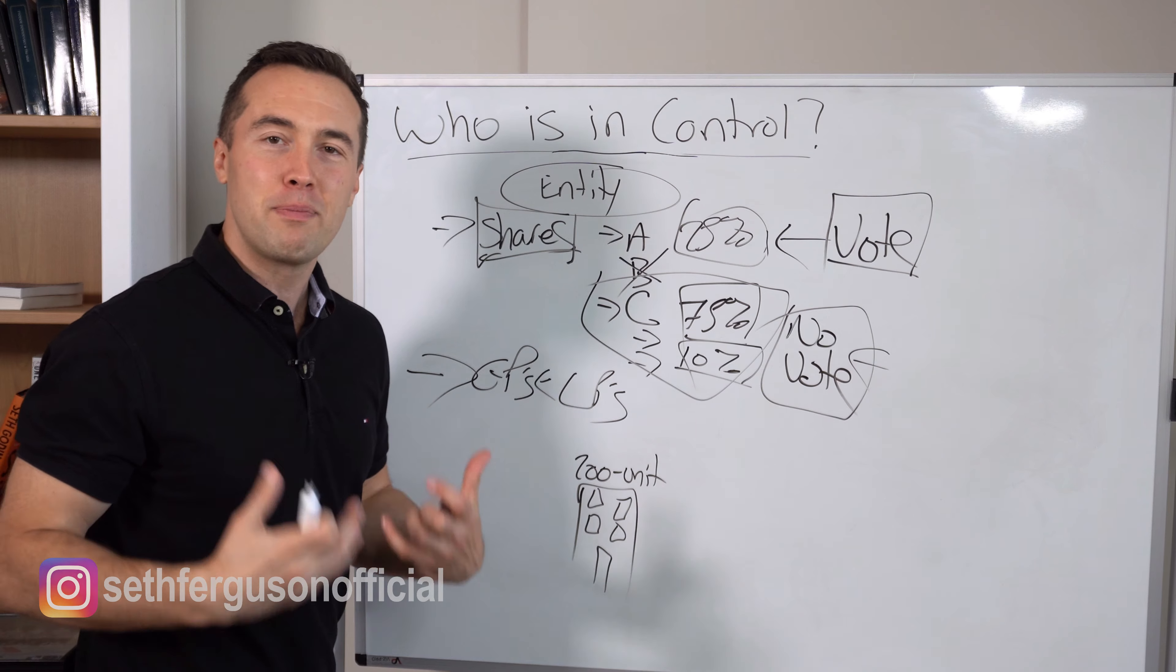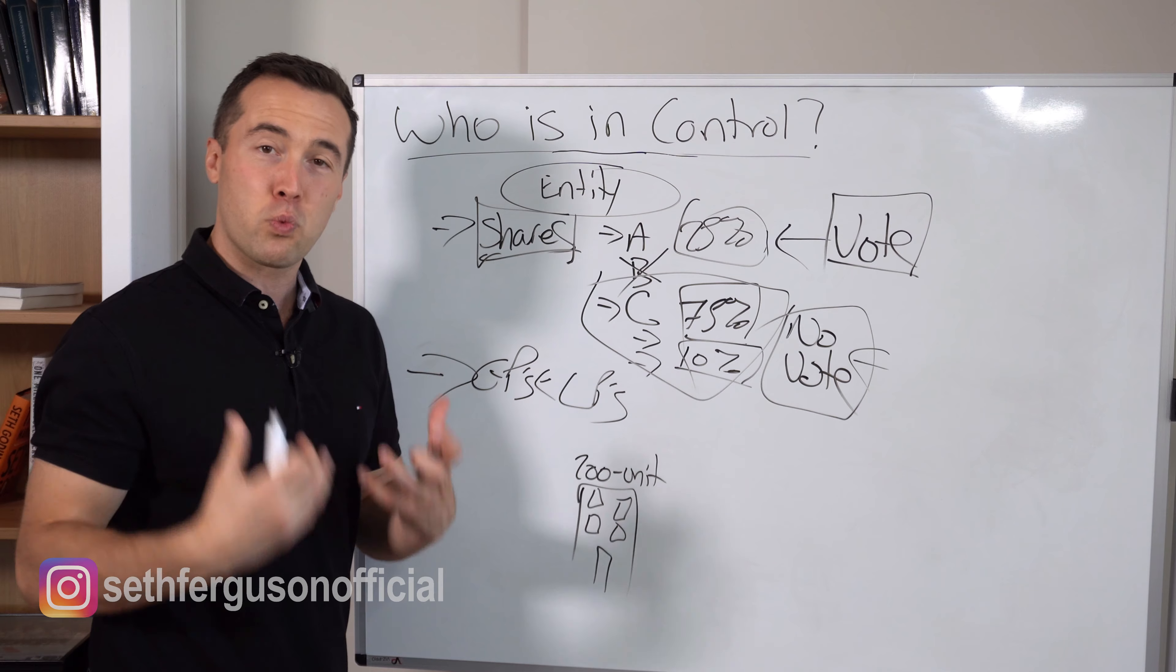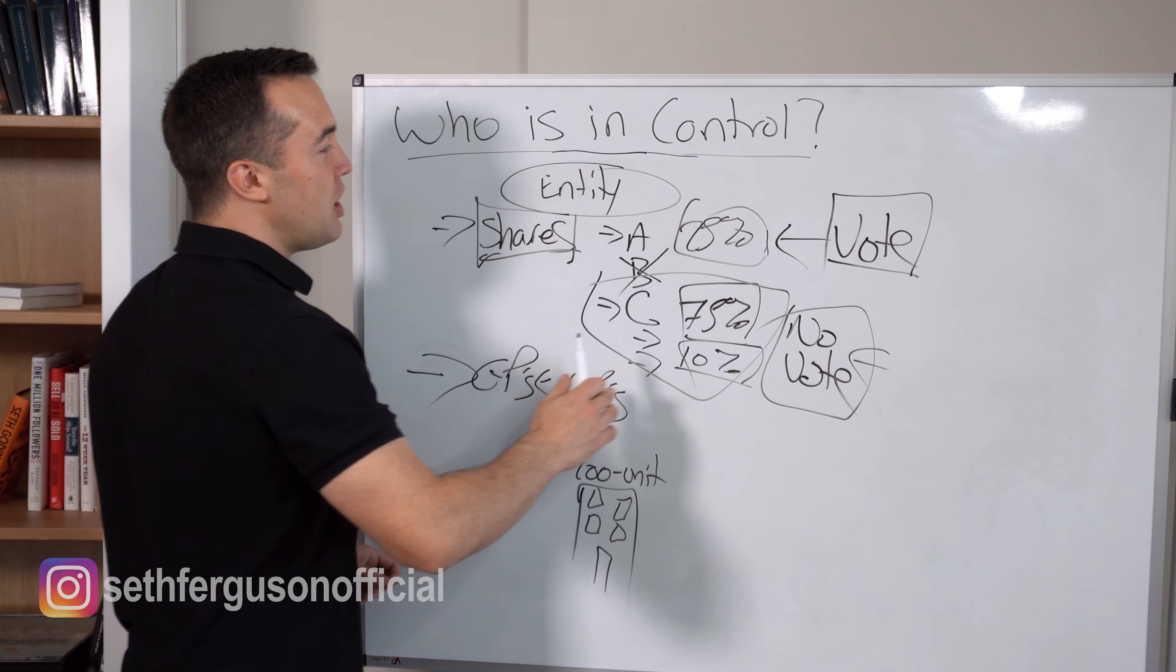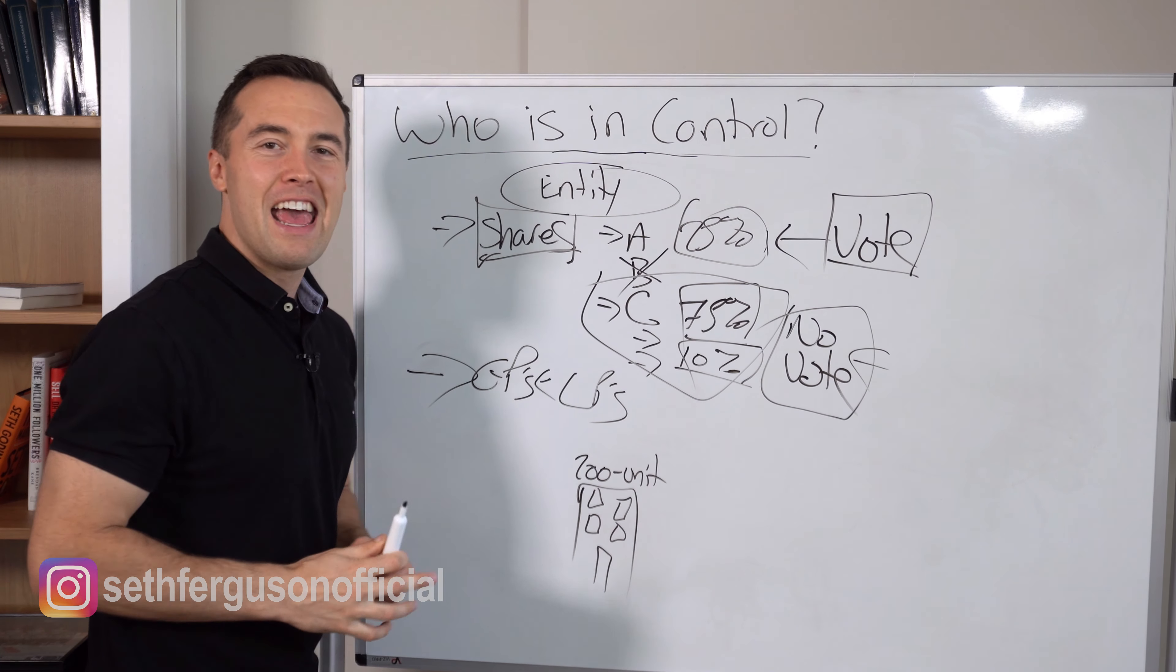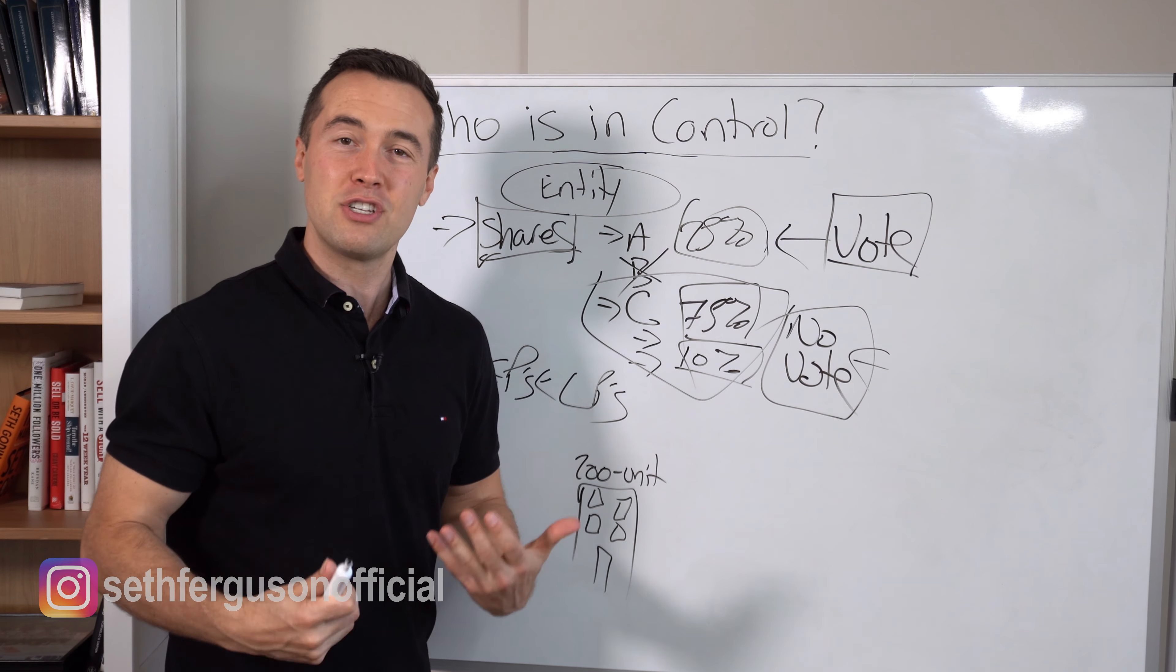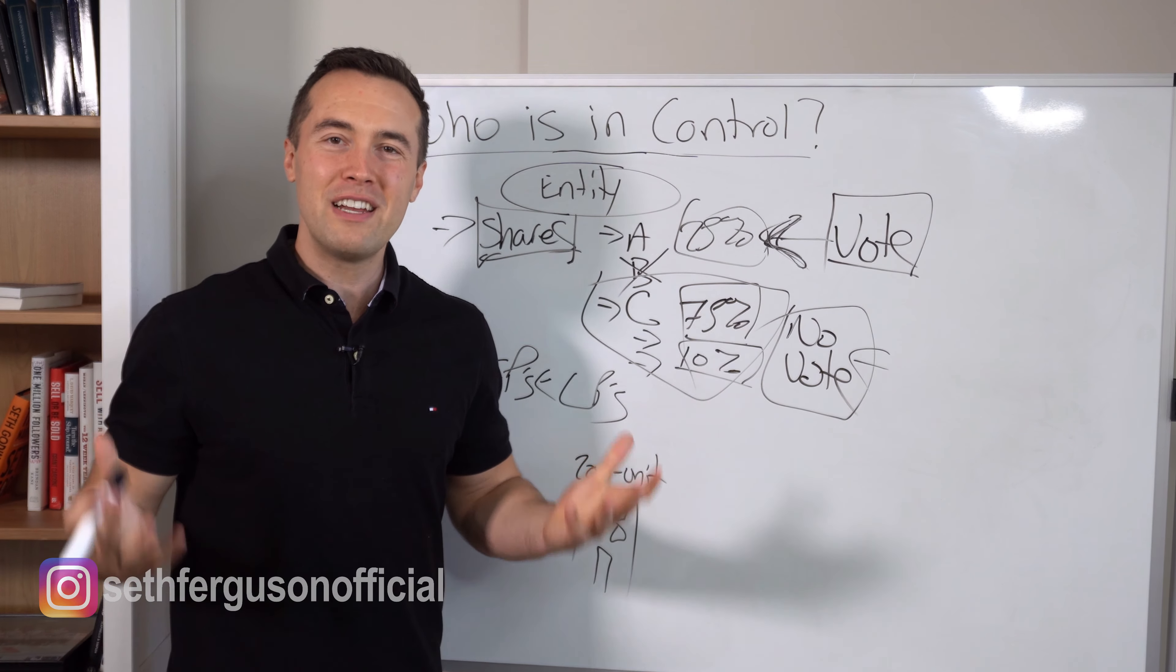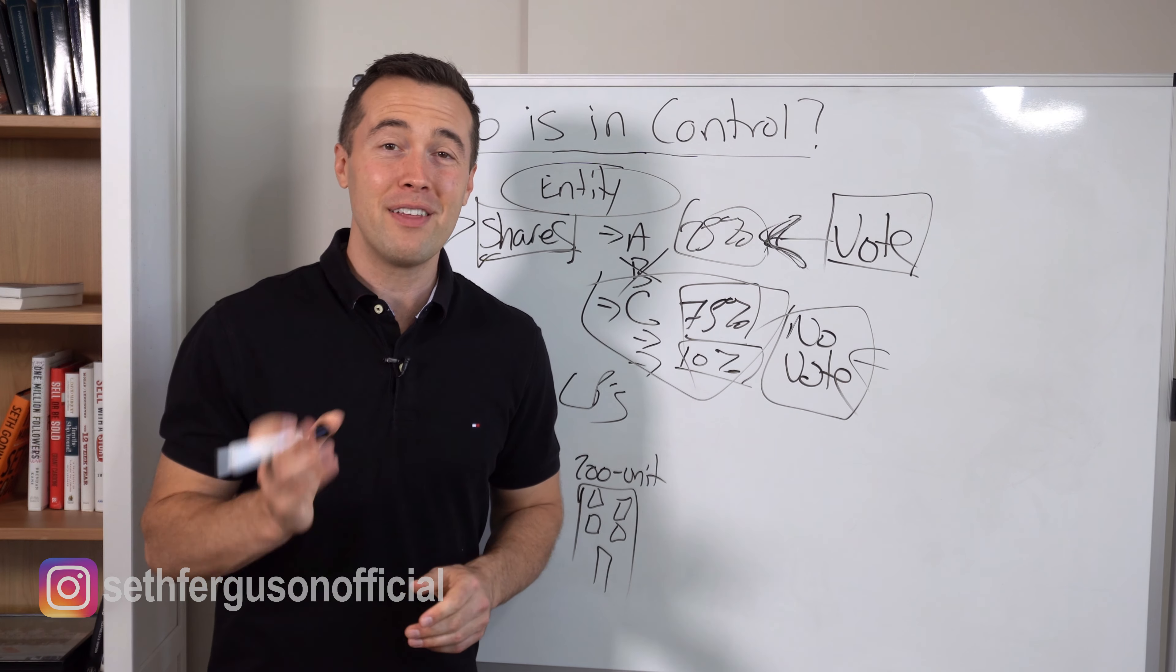The general partners, these are the workhorses. These are the people actually managing the deal, making sure that the money the LPs have invested is working hard and generating those expected returns. The GPs have Class A shares. These are the shares they are assigned, and they come with voting rights. So you are able to vote and make decisions about what happens to this property through the holding entity. In a nutshell, who controls a multifamily real estate syndication? Well, the answer to that is whoever controls the shares with the voting rights.